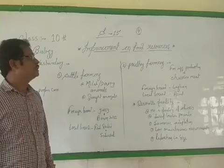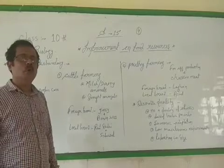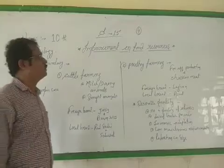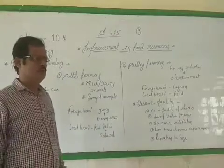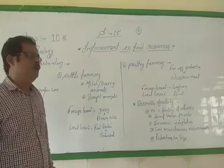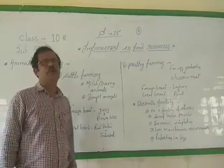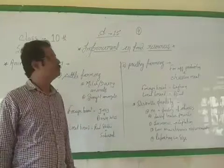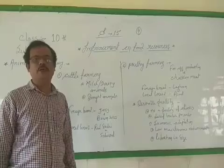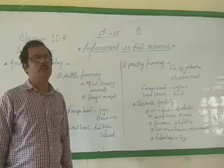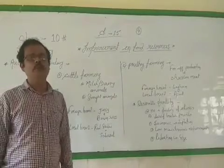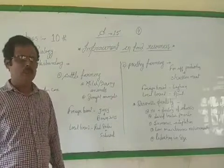This is the fourth part of the video of this chapter. In the previous videos, we all studied about different types of methods for production of food. As you know, for food we all depend on plants and animals. In the previous three videos, we studied about food material we get from plants. Now in this part, we will study about food we get from animals.